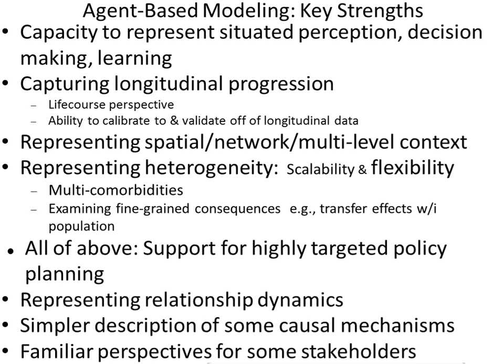The capacity to represent situated perception on the part of agents — for example, an individual from a poor background who wants to go to university lacks the social capital to secure often good advice about which universities to apply to. The impacts in decision-making and learning of that individual's particular context are important. Capturing longitudinal progression is something that agent-based modeling can do because it focuses on the individual — capturing both longitudinal and cross-sectional depictions of a population, whereas more aggregate models like traditional system dynamics give cross-sectional depictions over time.